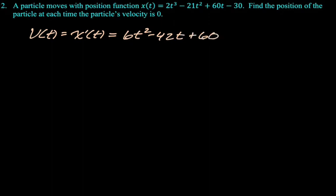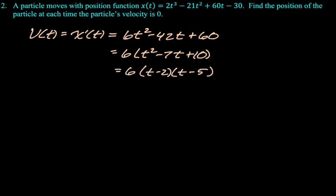6t² - 42t + 60. I'm gonna take a 6 out of everything, so 6(t² - 7t + 10). I'm going to factor t² - 7t + 10 into (t - 2) and (t - 5). That'll look like this. V(t) = 0 then at 2 and 5. Like what were the values in the last problem? I don't remember. I feel like we're doing the same thing here.